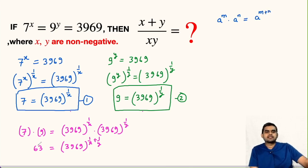So here we will get 63 = 3969^(1/x + 1/y). Now let us solve it here.